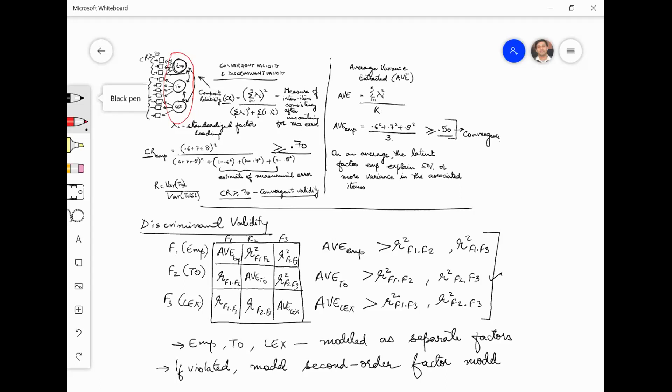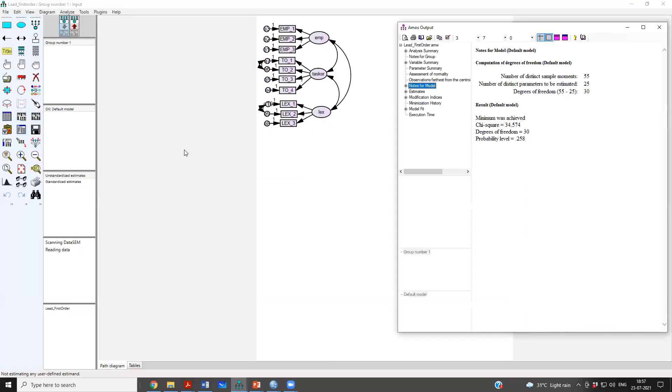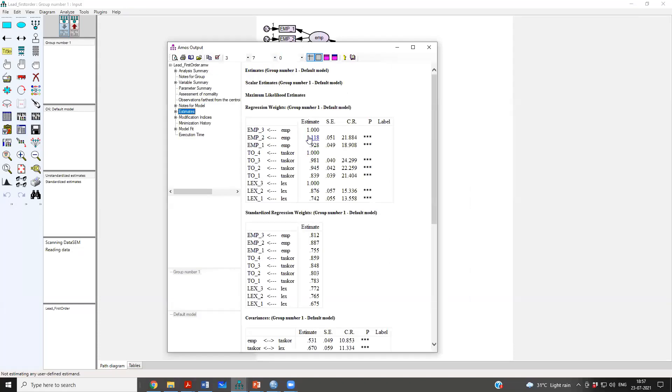Can we have lambdas more than 1 also? Usually we don't. Standardized lambdas, unstandardized lambdas can be more than 1. The model which we have run in AMOS shows 1.12. Yeah, but that is unstandardized. Let me show it to you. Unstandardized lambdas can be anything, but standardized will always should always be less than 1.